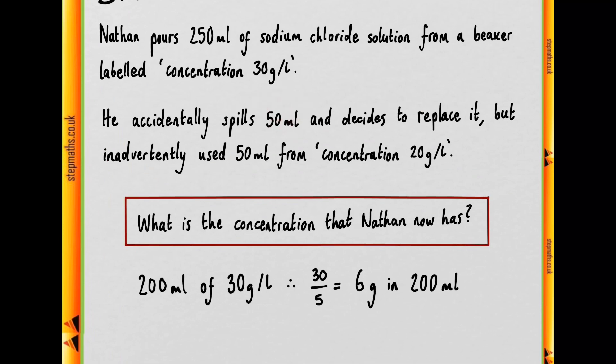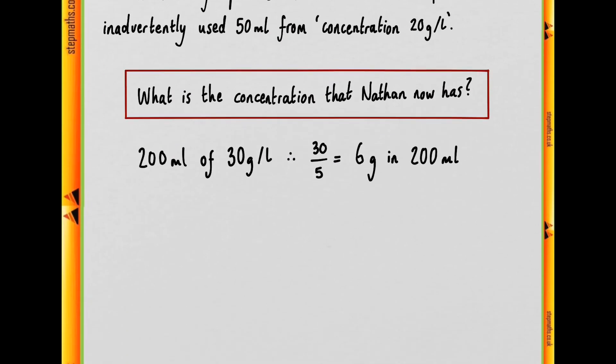But we also have 50 ml from our 20 grams per litre. 50 ml of 20 grams per litre. So if there are 20 grams in a litre and 50 ml is a twentieth of a litre, we can do 20 over 20 to work out that there is only 1 gram in our 50 millilitres of this lower concentration solution.